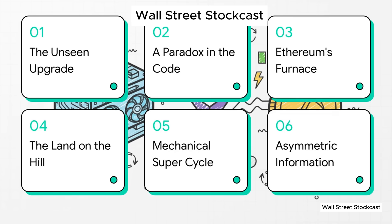So here's the game plan. First, we're going to pull back the curtain on this unseen upgrade and a really weird paradox that's hidden deep inside its code. Then we'll follow the data trail, the on-chain evidence to see this new Ethereum furnace in action. After that, we'll connect the dots to a company that's sitting on what you could call a digital treasure chest. And finally, we'll see how all this sets up what's being called a mechanical super-cycle, and an information gap that might just be the most important piece of this whole story.